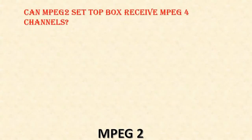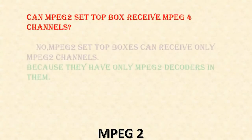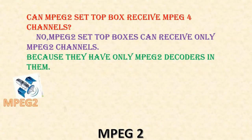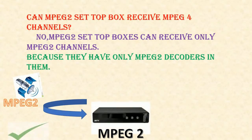Can an MPEG 2 set-top box receive MPEG 4 channels? No. MPEG 2 set-top boxes can receive only MPEG 2 channels because they have only MPEG 2 decoders in them.